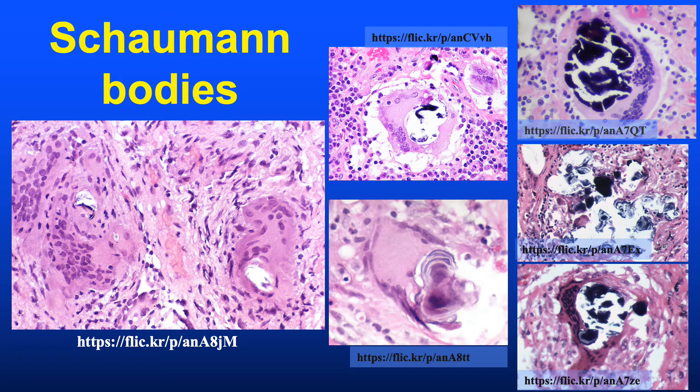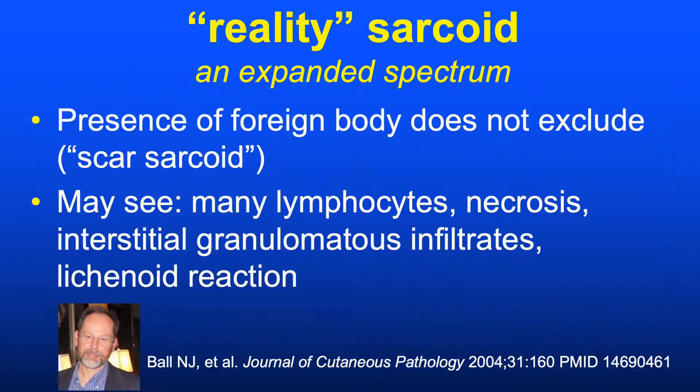The second so-called sarcoid body is the Schaumann body, named after Dr. Schaumann, a Swedish dermatologist — although sources indicate it was first described by Dr. von Schüppel, a German pathologist. This is a calcified, multinucleated histiocyte, shown here in multiple images courtesy of Dr. Yale Rosen of Long Island, New York, who also kindly uploaded the images of the asteroid bodies.